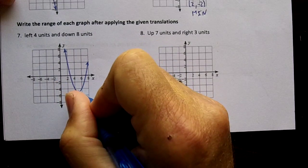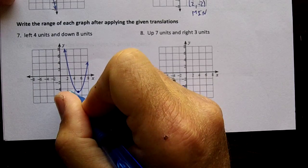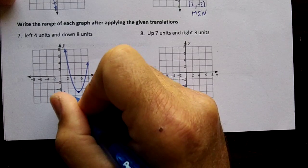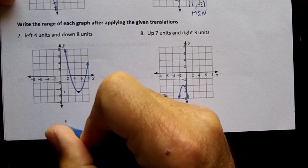We're going to go left four units. So one, two, three, four will be right here and down eight more. If you go down eight from negative five, we'll be at negative 13.